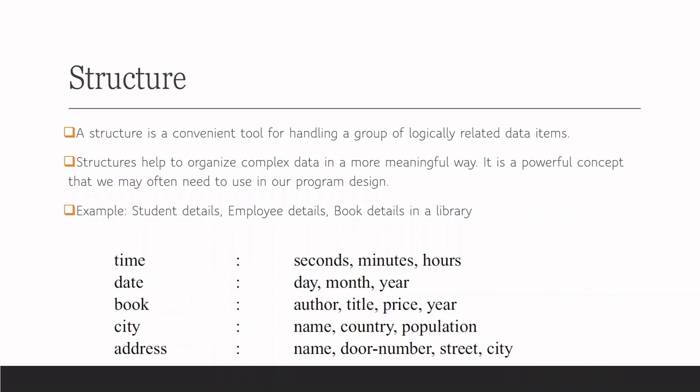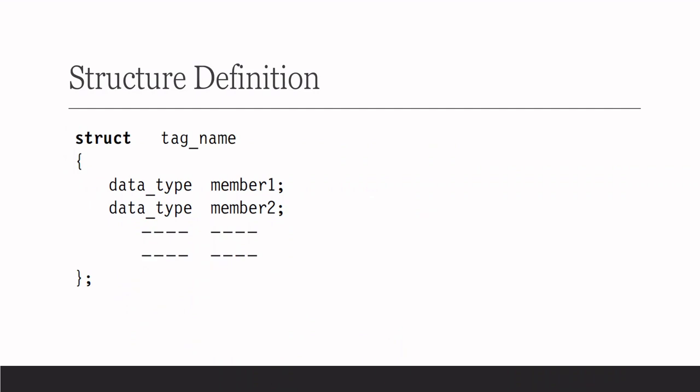Book, city, address, etc. are other examples. Now, back to the first definition: it is a convenient tool for handling a group of logically related data items, and items can be of the same data type or different data types. This is the syntax for defining a structure. Here, struct is a keyword, and after struct you give the tag name — that is the name of the structure. Within the curly brackets, you give the different structure elements or members: data type followed by the member name. You can give a sufficient number of structure elements, enclose them in curly brackets, and terminate with a semicolon.